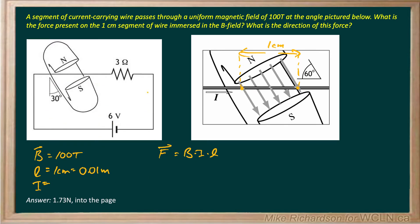I is due to the external circuit where there's a 6 volt battery and a 3 ohm resistor, so we're just going to use Ohm's law. I = V over R. V is 6 volts, resistance is 3 ohms, so I will be 2 amps. This current passing between the poles is going to be 2 amps.